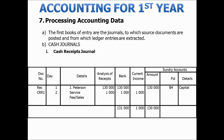The journals are the first books of entry. This is where the source documents are posted and from which ledger entries are then extracted. We'll start off with the cash journals.